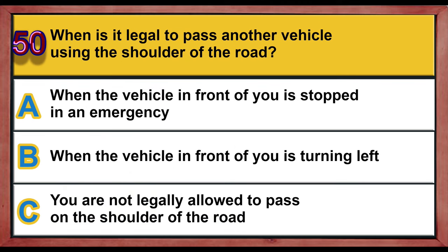Question 50. When is it legal to pass another vehicle using the shoulder of the road? A. When the vehicle in front of you is stopped in an emergency. B. When the vehicle in front of you is turning left. C. You are not legally allowed to pass on the shoulder of the road. Correct answer is C: You are not legally allowed to pass on the shoulder of the road.